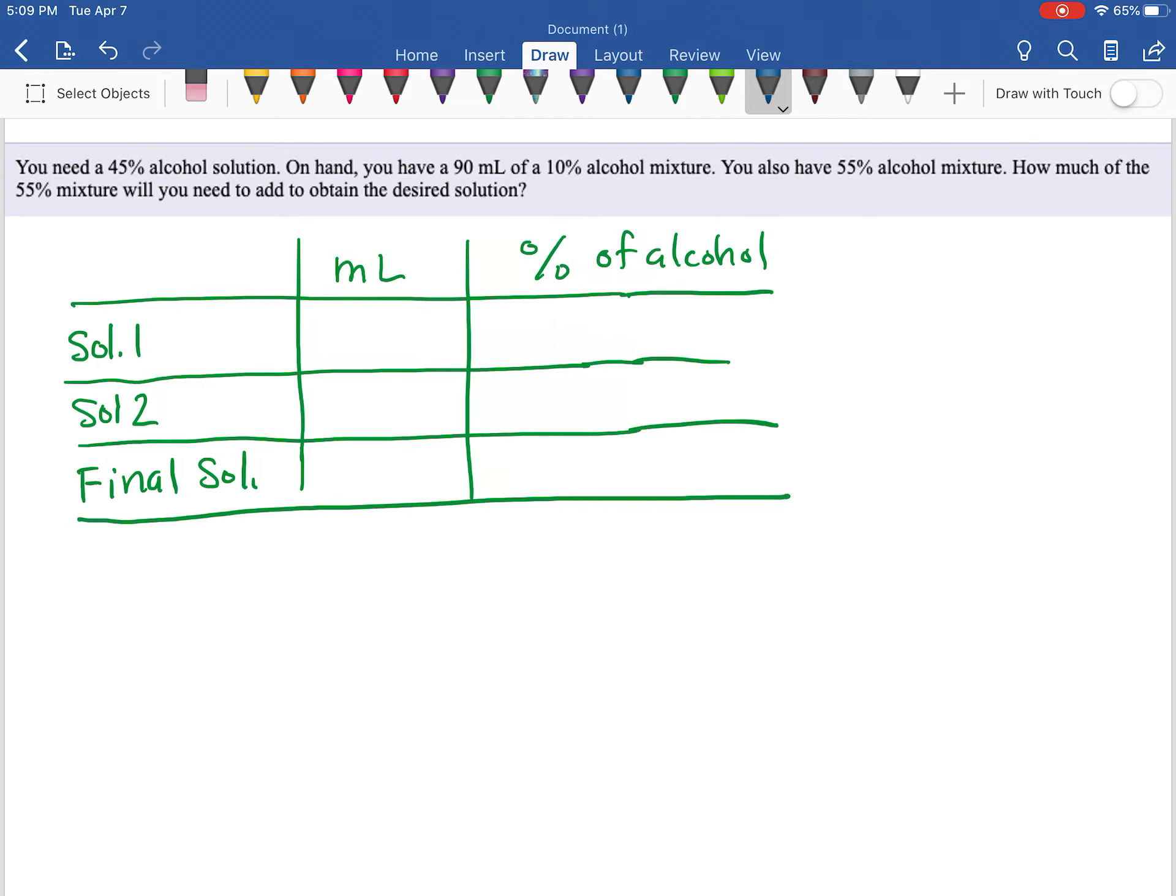You need a 45% alcohol solution. On hand, you have 90 milliliters of a 10% alcohol mixture, and you also have 55% alcohol mixture. How much of the 55% mixture will you need to add to obtain the desired solution?